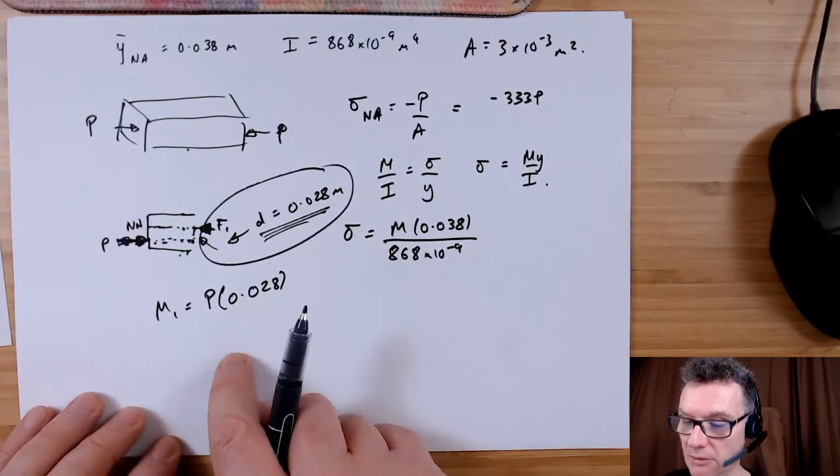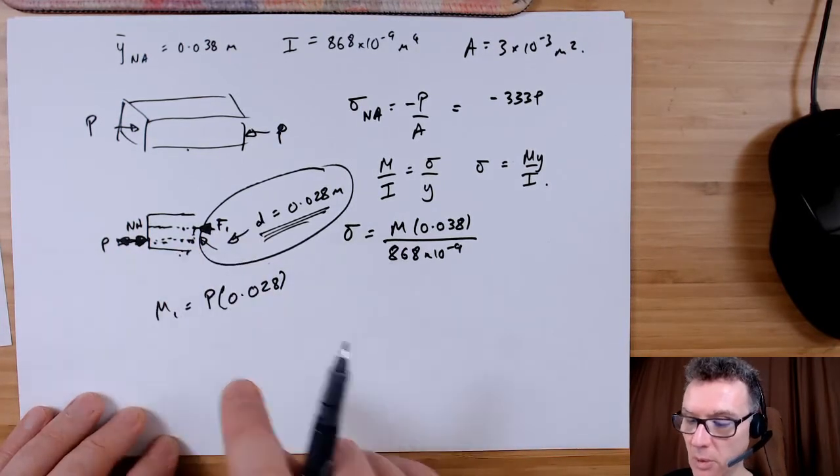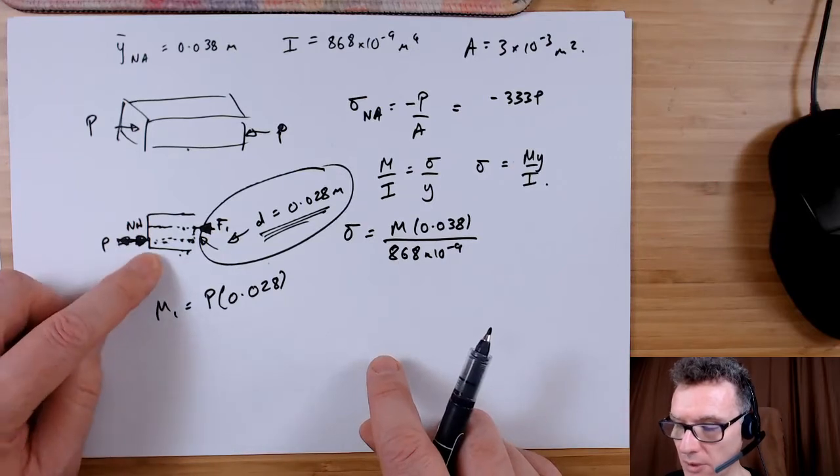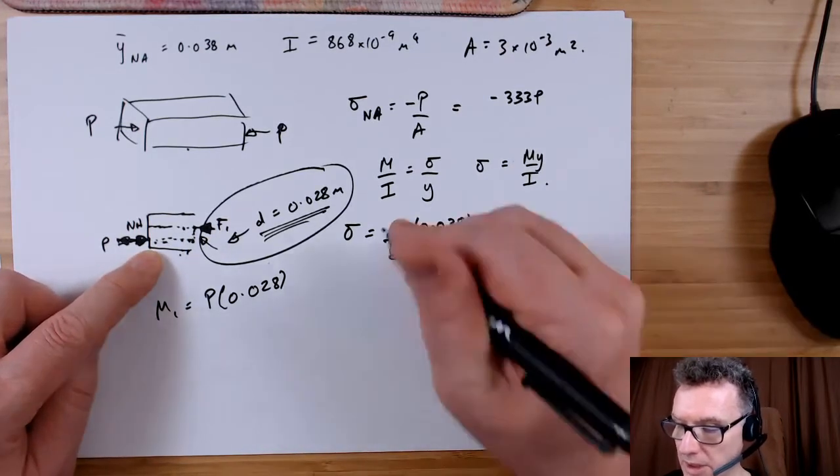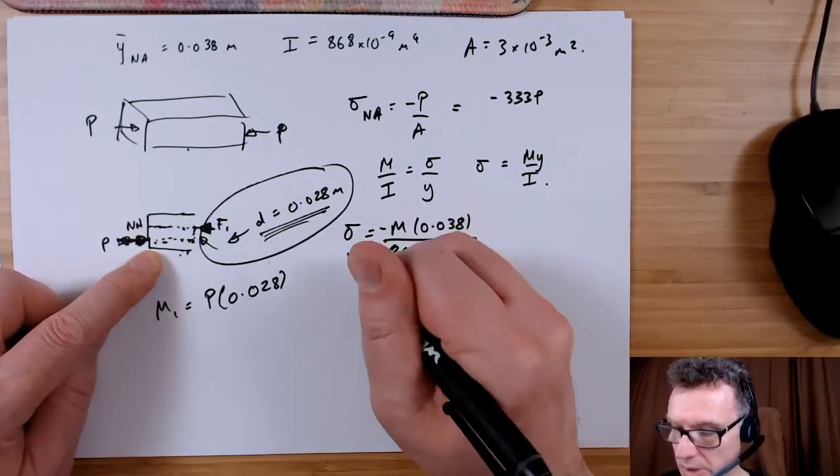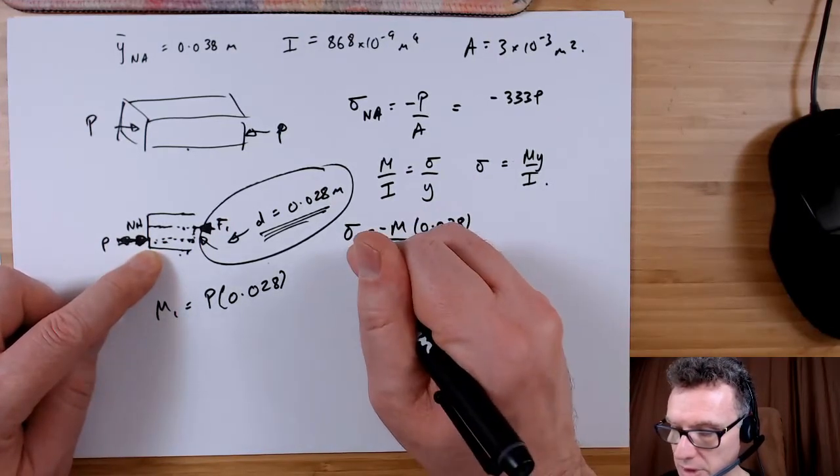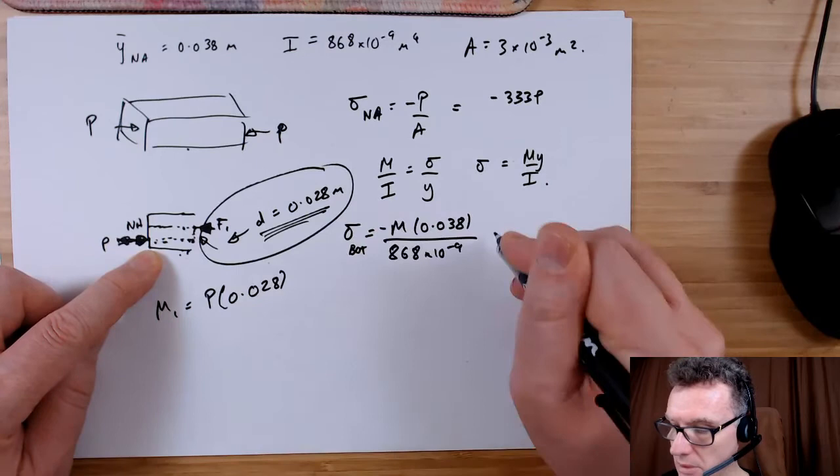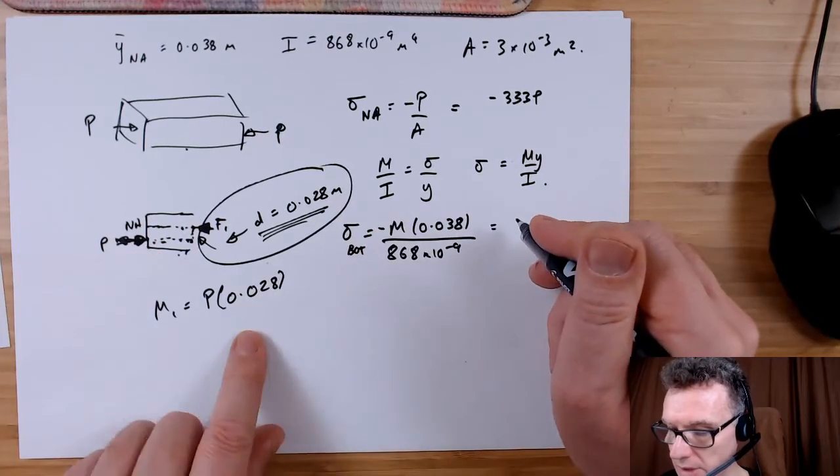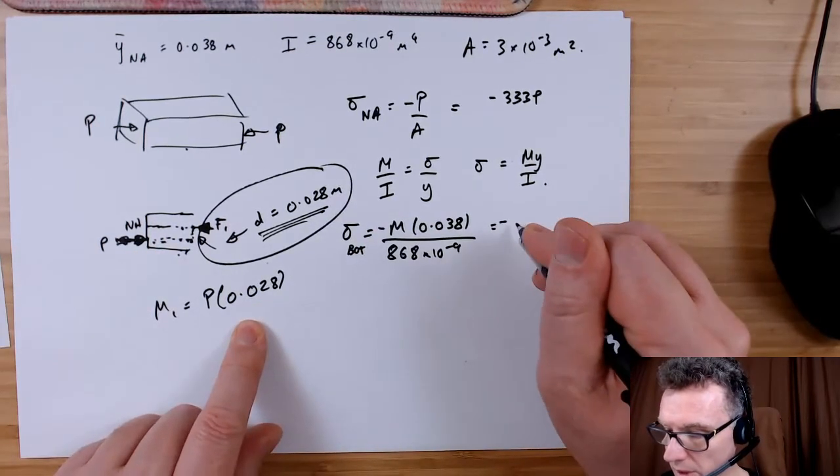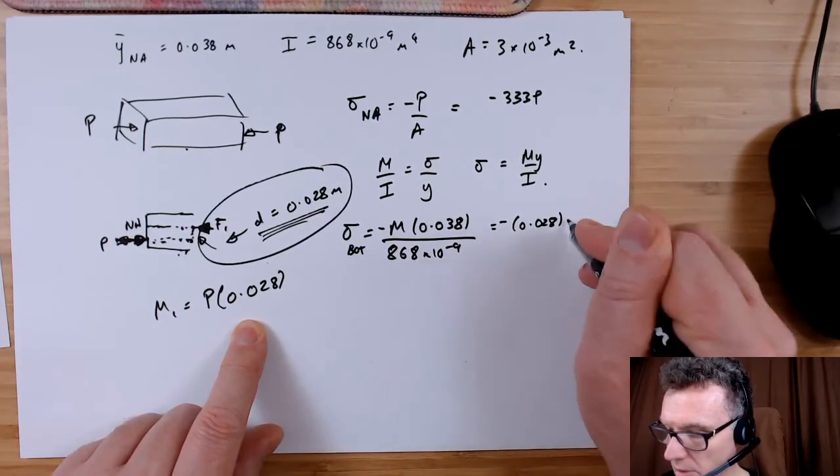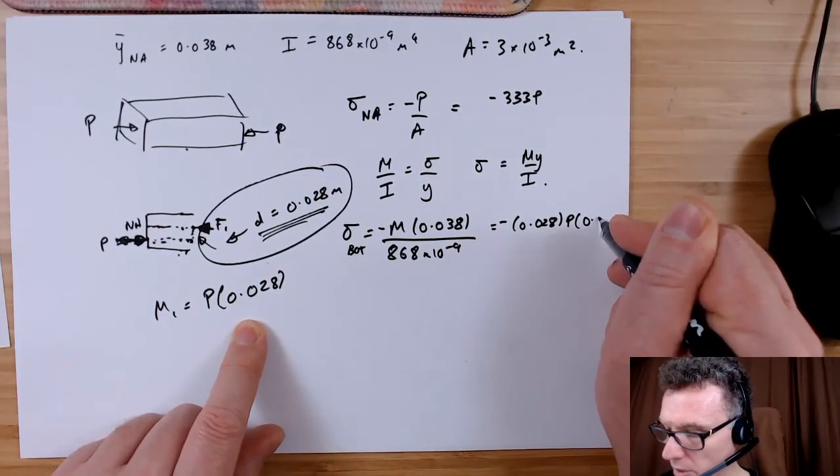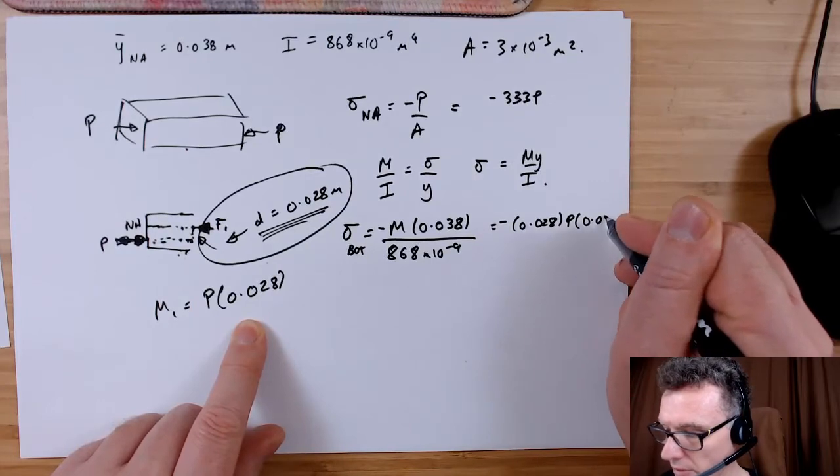So I'm not trying to confuse myself. I want this stress at the bottom to be negative, so minus, so that's my compressive stress at the bottom. And so we can then put in this, so we get minus 0.028 P times by 0.038.